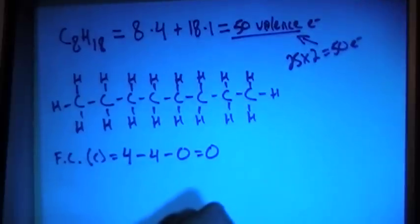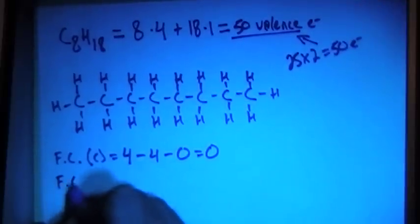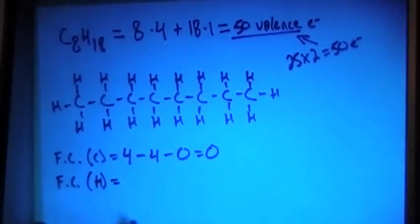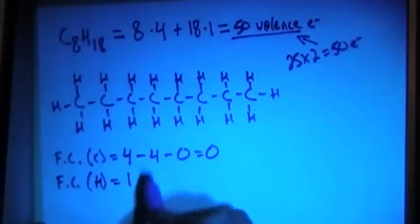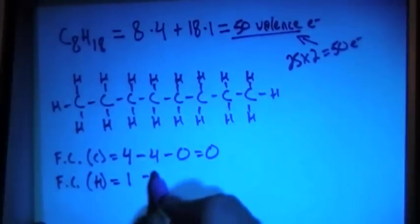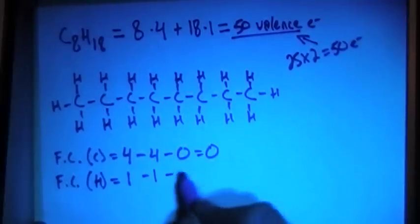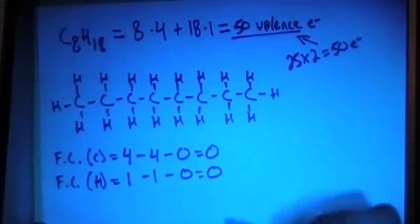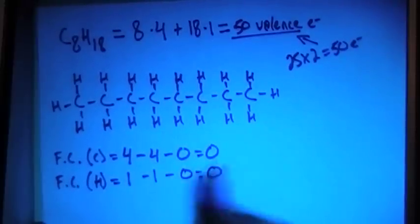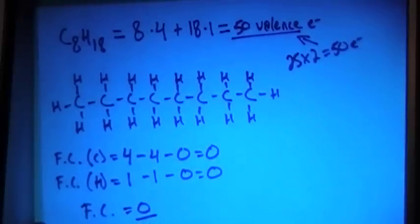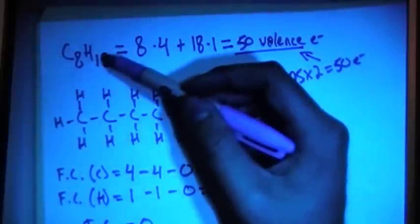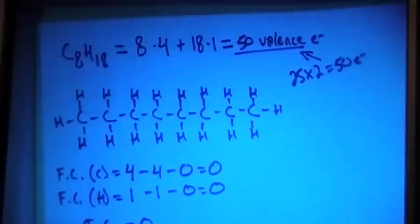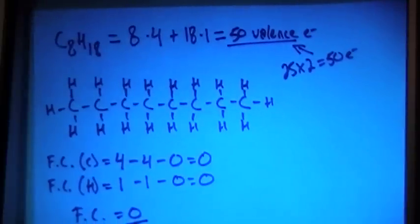Now, the formal charge of the hydrogens is one valence brought in, and they all have only one single bond, so that's minus one bond for each one, minus 0 non-bonding electrons, and that's going to give us a formal charge of 0 as well. So, if you sum up all these formal charges, the overall formal charge is going to equal 0, which is what you want when you have a neutrally charged, or non-charged compound, such as octane, which is C8H18.